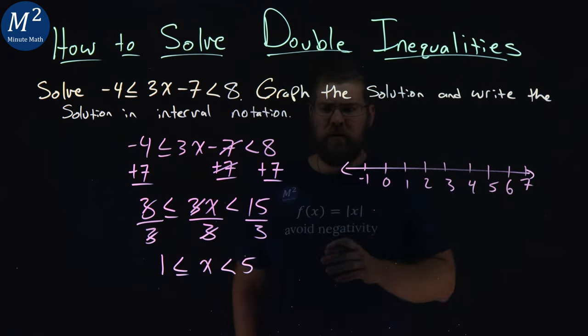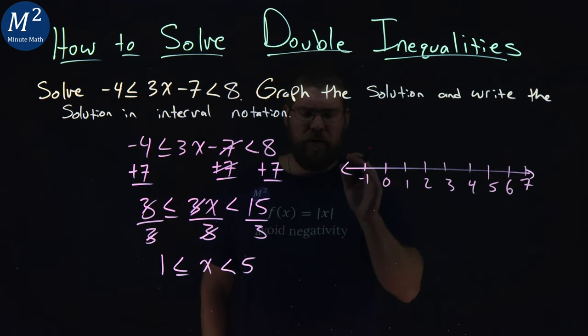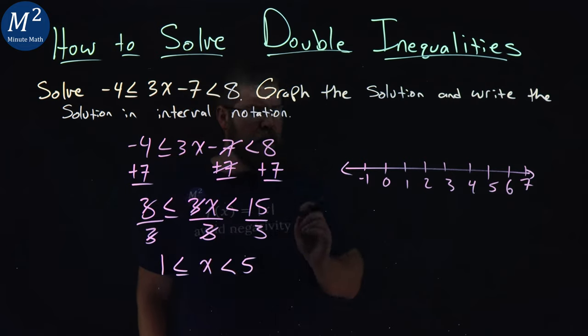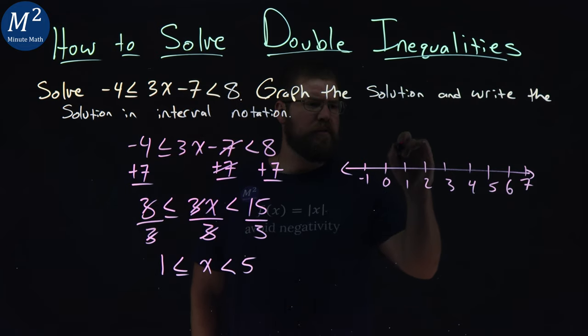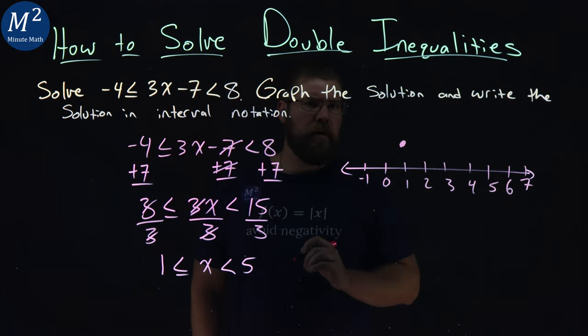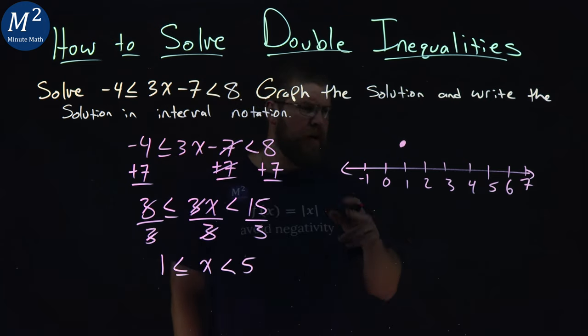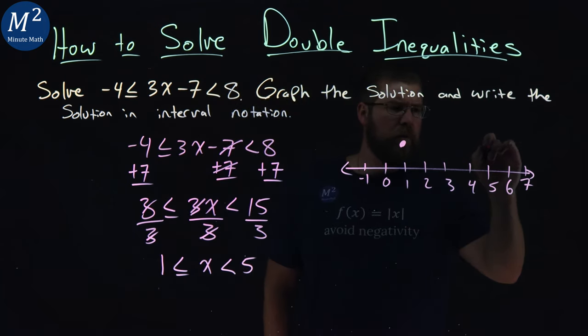Now again, like my previous videos, I like to graph above the number line here. It shows up better. One is less than or equal to x. So we have one, we can equal one, so we have a closed circle. We also say we have x is less than five. It's not equal to five, but it's less than five.